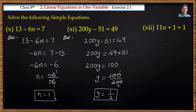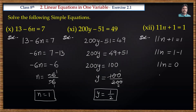Next problem: 11n plus 1 is equal to 1. We transpose plus 1 to the right side, it becomes minus 1: 11n is equal to 1 minus 1, which is 0. We need n value, so divide by 11: n is equal to 0 by 11. Zero divided by anything is zero, so n is equal to 0.